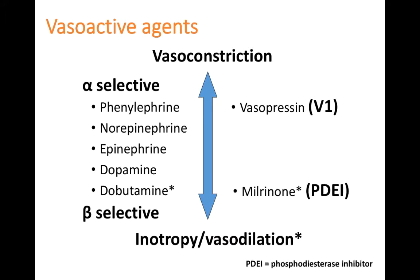Milrinone, on the other side of the spectrum, causes inotropy and vasodilation similar to dobutamine, but through a different mechanism. In this case it's a phosphodiesterase inhibitor, which we'll discuss in more detail later.